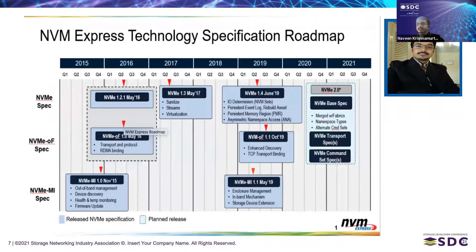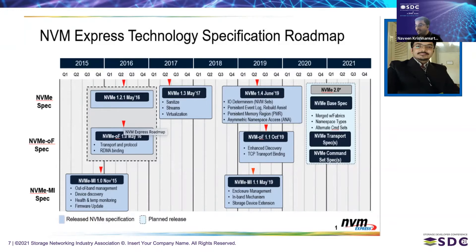Let's look at what the NVMe Express technology specification is up to and what the roadmap is. There are three main categories in the NVMe specification: the NVMe base spec for devices, the NVMe over Fabric spec for fabric aspects, and the MI spec covering management and infrastructure. The technology started in 2015 and the first specs for all three categories were rolled out in mid-2016, with MI arriving in November 2015. NVMe 2.0 spec is now available.